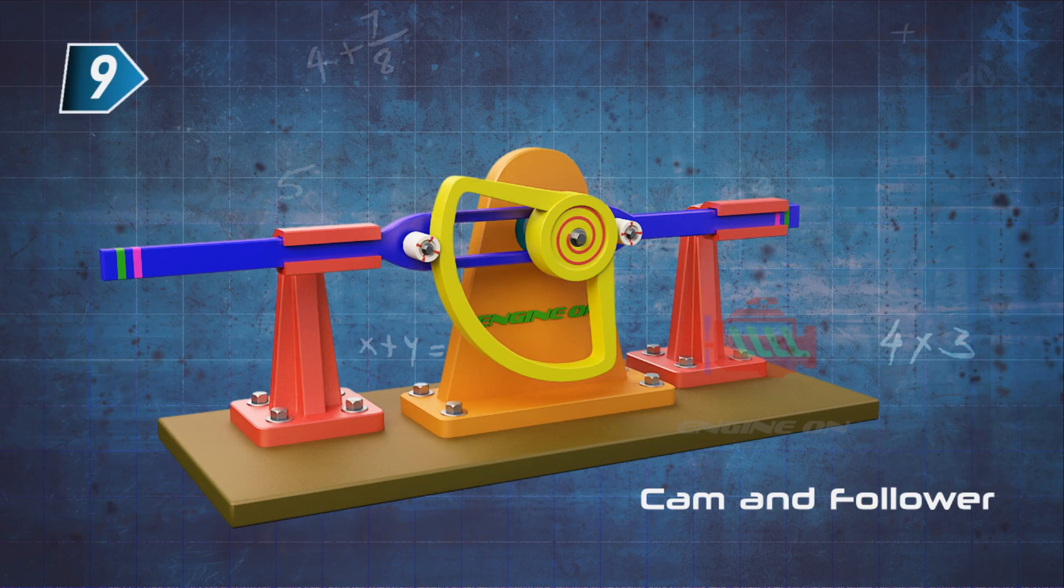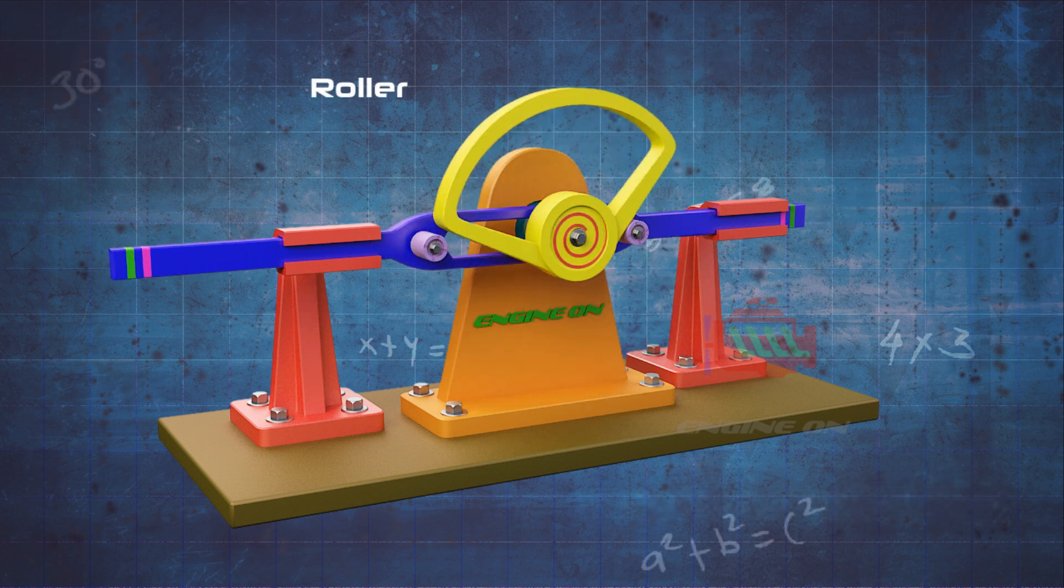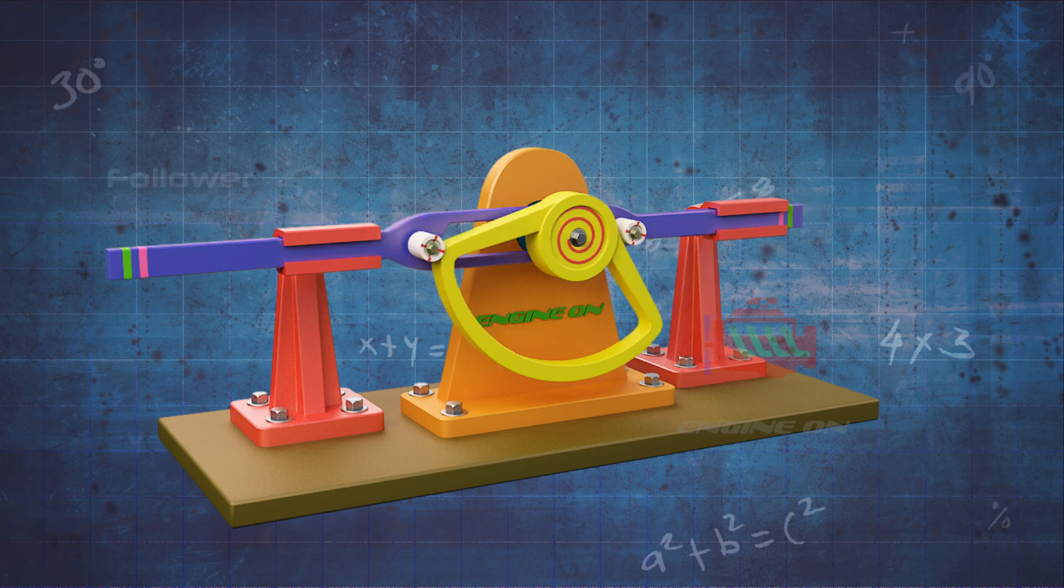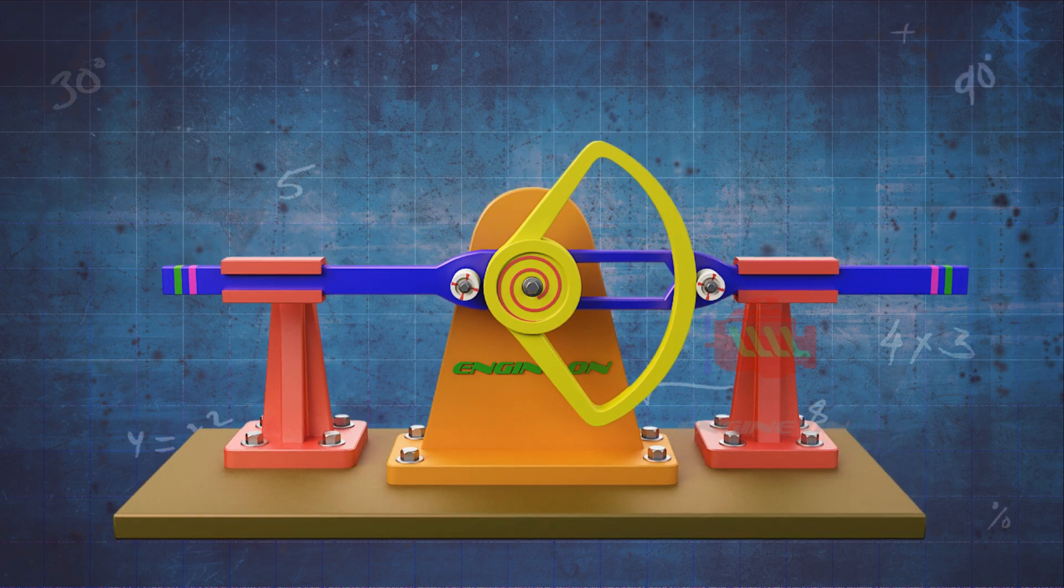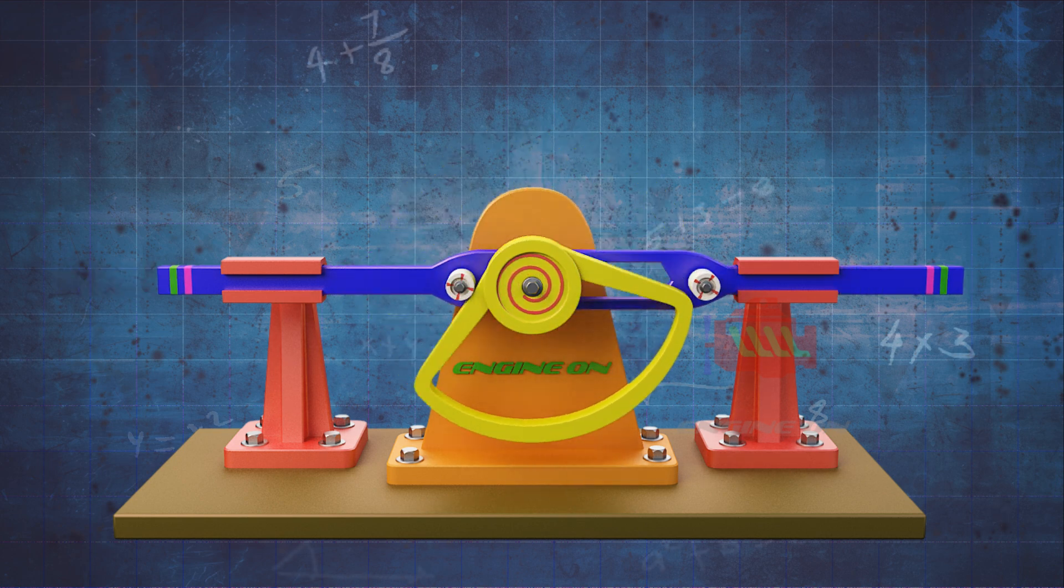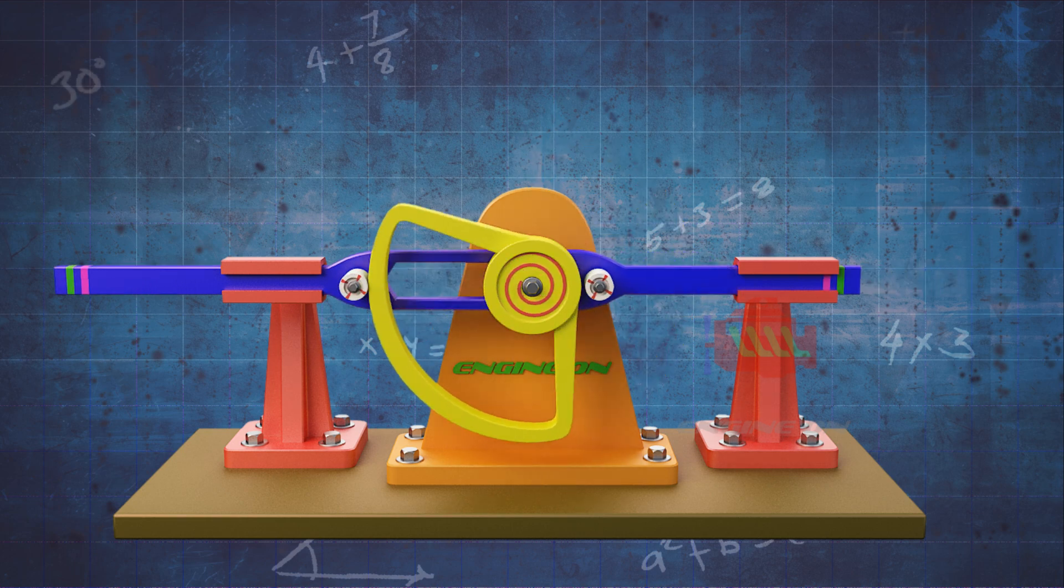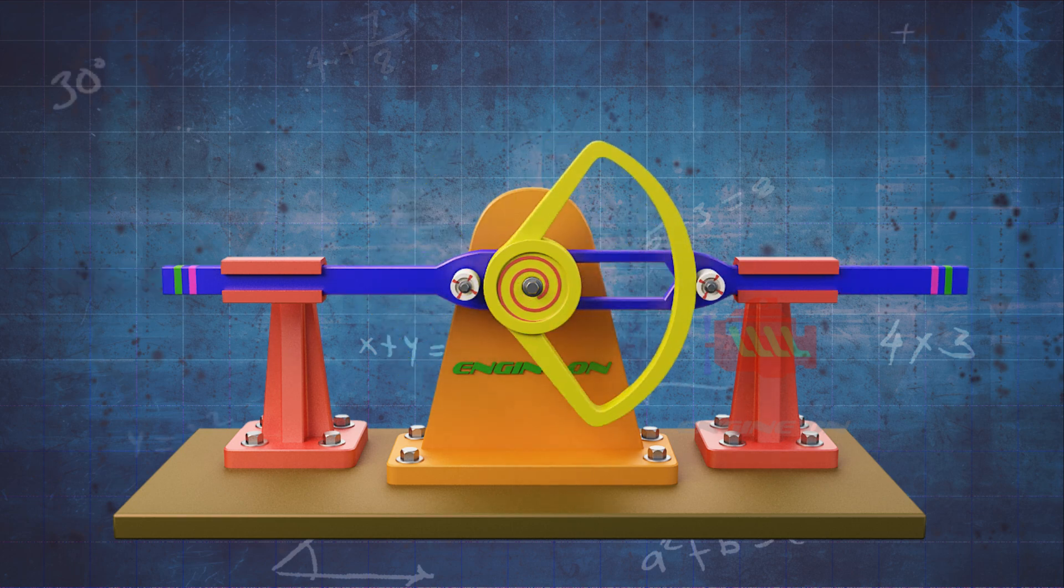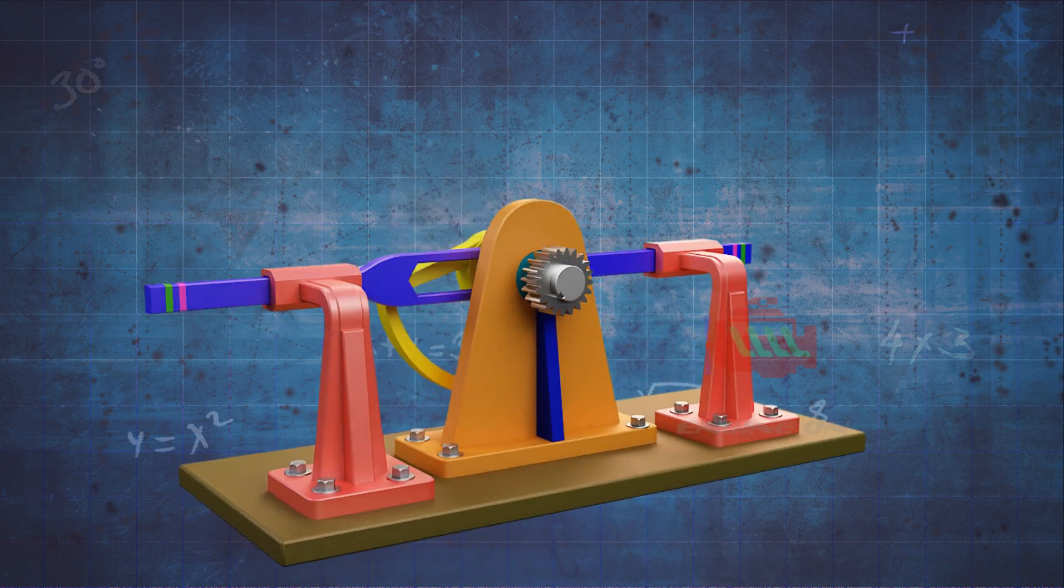A cam and follower mechanism is a mechanical device that changes rotary motion into linear motion. The cam is a rotating disc or cylinder with an irregular shape. The follower is a lever or other object that slides or rolls along the cam's surface. As the cam rotates, the follower rises and falls in a process called reciprocating motion.